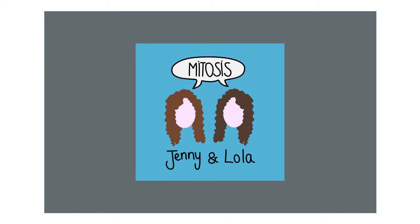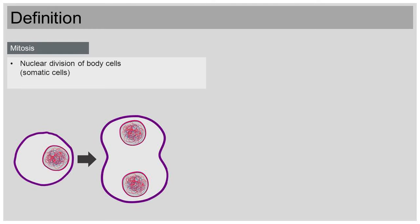So what is mitosis? The term mitosis describes the division of the nucleus of a human body cell, also called somatic cell. Before this can happen, the genetic information located in the nucleus has to be duplicated.